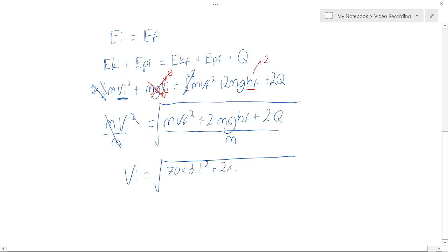Plus 2 times 70 is mass times 9.8 is g times 2 is our height final. Remember it was 5, but we changed it to 2 so we can cancel our height initial. Plus 2Q is 2 times 500.